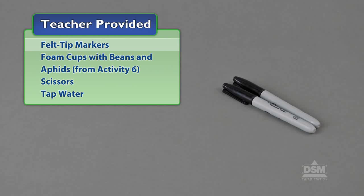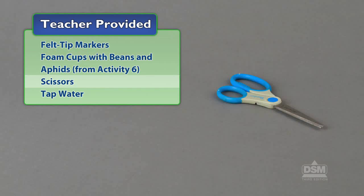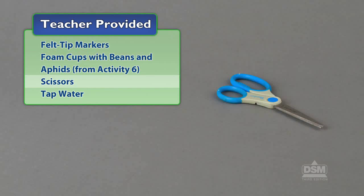You will also need to provide felt tip markers, foam cups with beans and aphids from activity 6, scissors, and tap water.